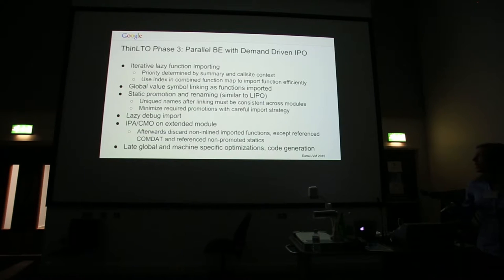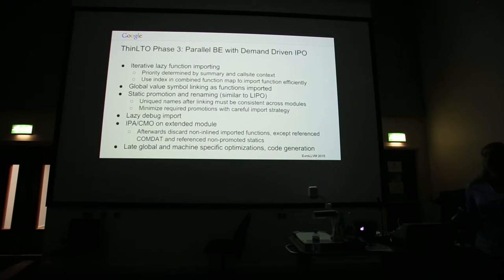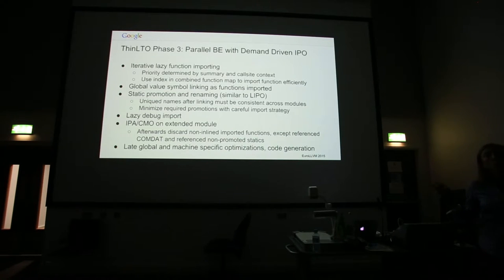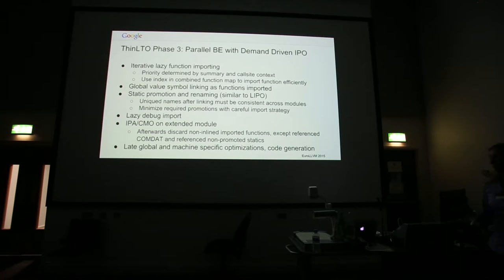Another thing you do is import debug information, and to do this efficiently you want to do this lazily after you're done with importing. After all the importing, you can simply do IPA cross-module optimization as you would normally on this now-extended module. Once that's done, you can discard anything that was imported but not inlined — with a few special cases, you can eliminate all those at that point. Then it's just the rest of normal compilation and optimization.